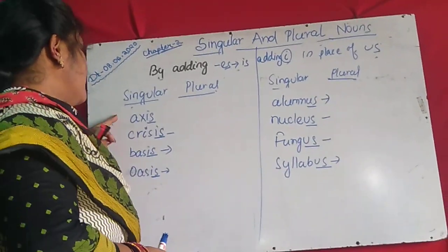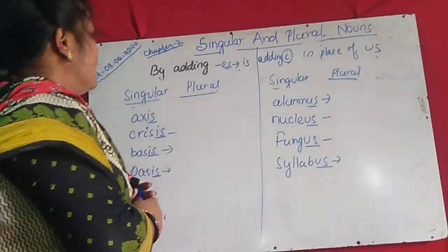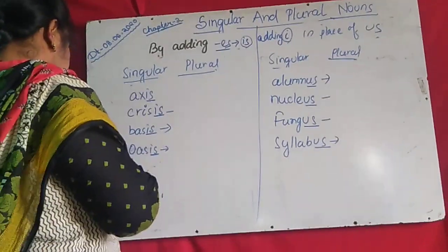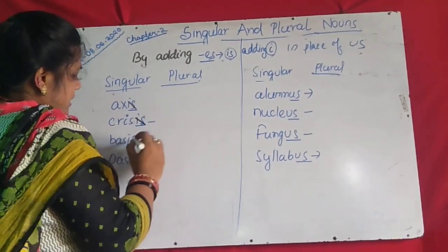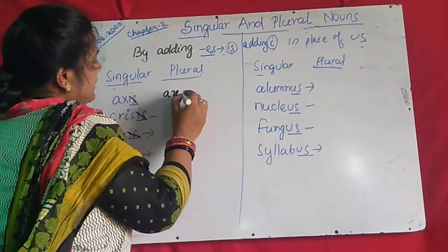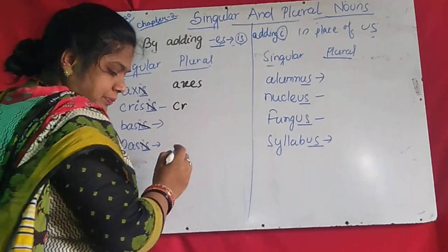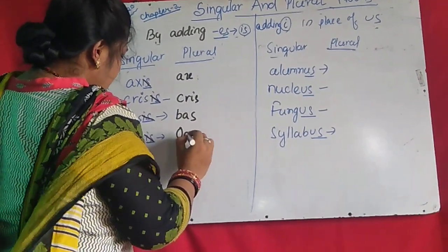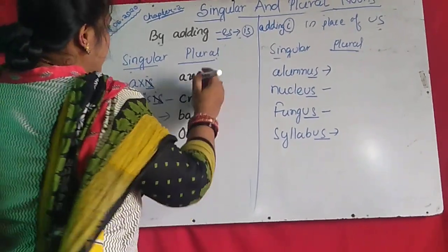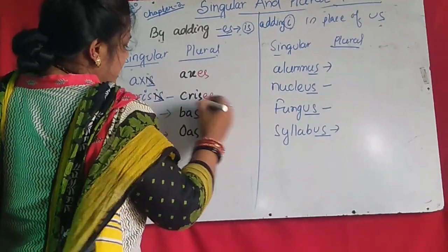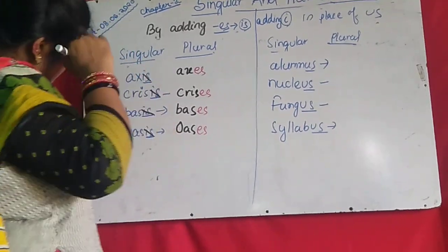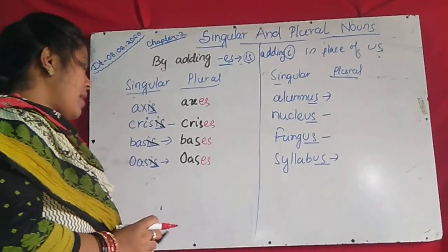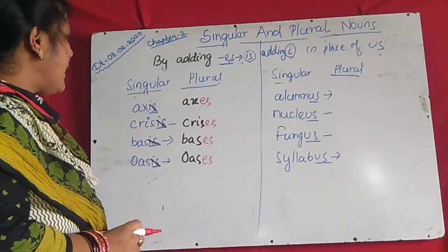Then some new rules. If the word is ending with IS, then you change IS to ES to form the plural. Simply you cut the IS and write ES. So 'axis' — A-X-I-S — becomes A-X-E-S: 'axes.' 'Crisis' — C-R-I-S-I-S — becomes C-R-I-S-E-S: 'crises.' 'Basis' — B-A-S-I-S — becomes B-A-S-E-S: 'bases.' 'Oasis' — O-A-S-I-S — becomes O-A-S-E-S: 'oases.' So IS changes to ES.